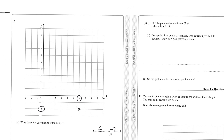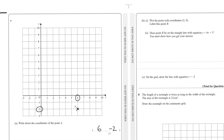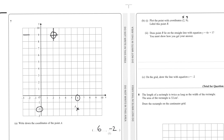Part b says plot the point with coordinates (2, 9). Our x value of 2 goes along the horizontal axis, and our y value of 9 goes up the vertical axis. Where they both cross is the coordinate. We plot and label it B.